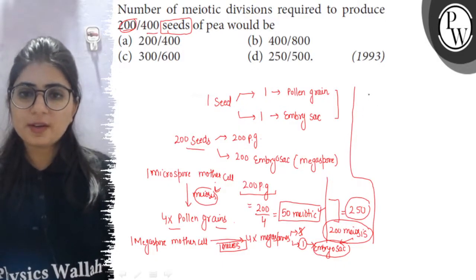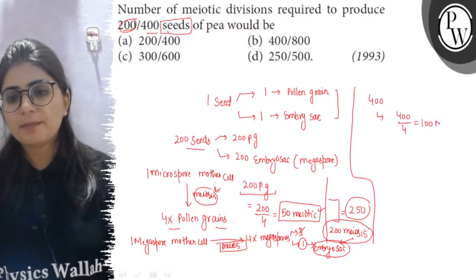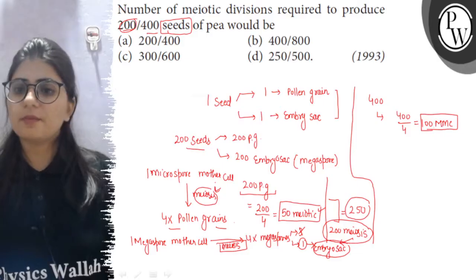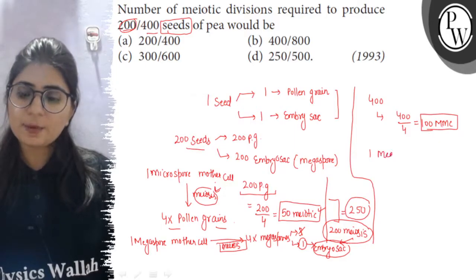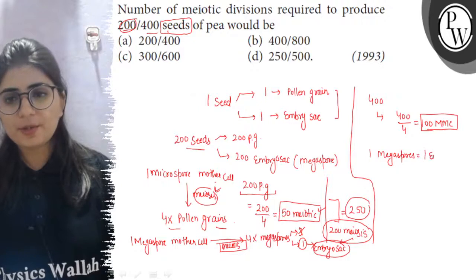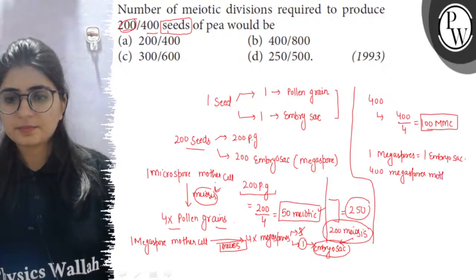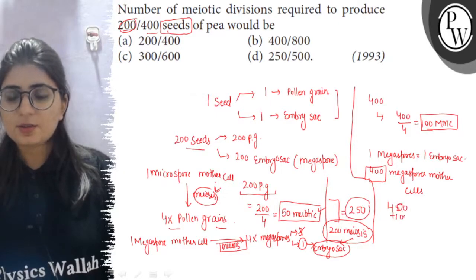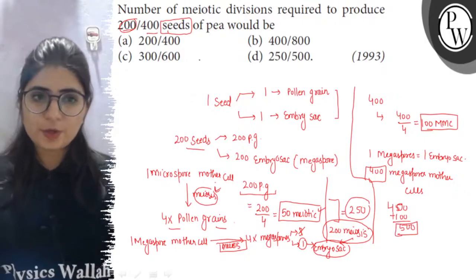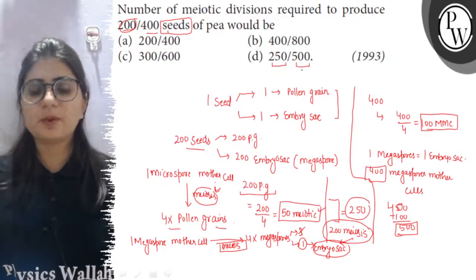Similarly, to produce 400 seeds: 400 divided by 4 equals 100 — so 100 microspore mother cells will undergo meiotic division to produce 400 pollen grains. And since one megaspore mother cell equals one embryo sac, to produce 400 embryo sacs we need 400 megaspore mother cells, giving 400 meiotic divisions. So, 400 plus 100 equals 500 meiotic divisions required to produce 400 seeds.